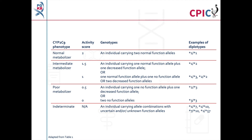There are over 70 defined CYP2C9 alleles, known as star alleles. Star alleles are assigned an activity value relative to the star 1 allele, which is designated as a normal function allele with an activity value of 1. The activity values of a patient's CYP2C9 star alleles can be combined to make a total CYP2C9 activity score. This activity score is then used to assign a metaboliser phenotype to the patient, as shown in this table and in Table 1 of the guideline.